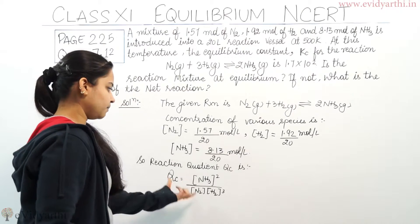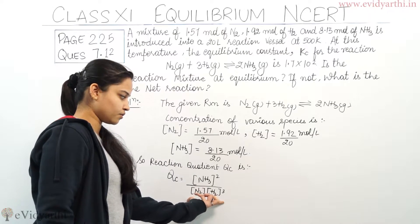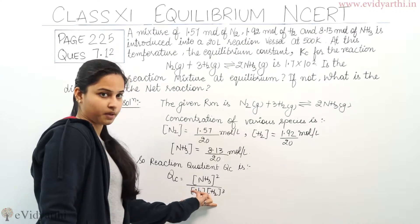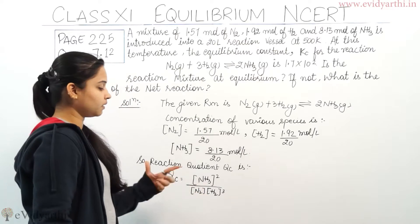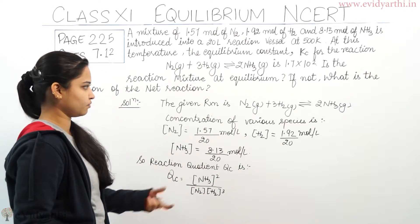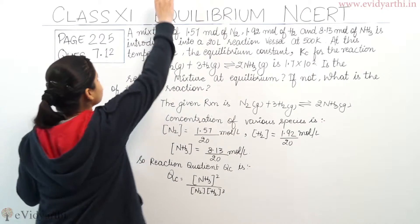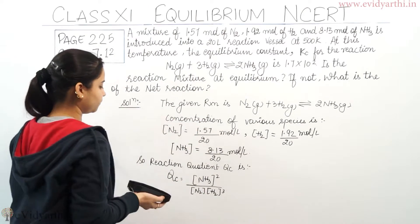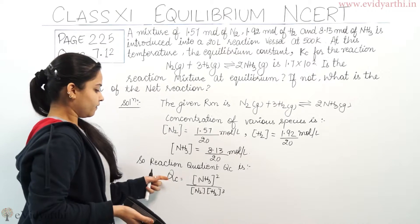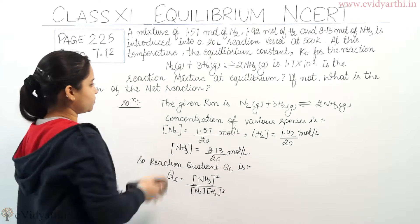Qc is equals to NH3 squared divided by N2 in the gaseous state and H2 having stoichiometric coefficient 3. Now, we will be substituting these values of concentration in this particular equation of reaction quotient and then we will be calculating the value of reaction quotient.